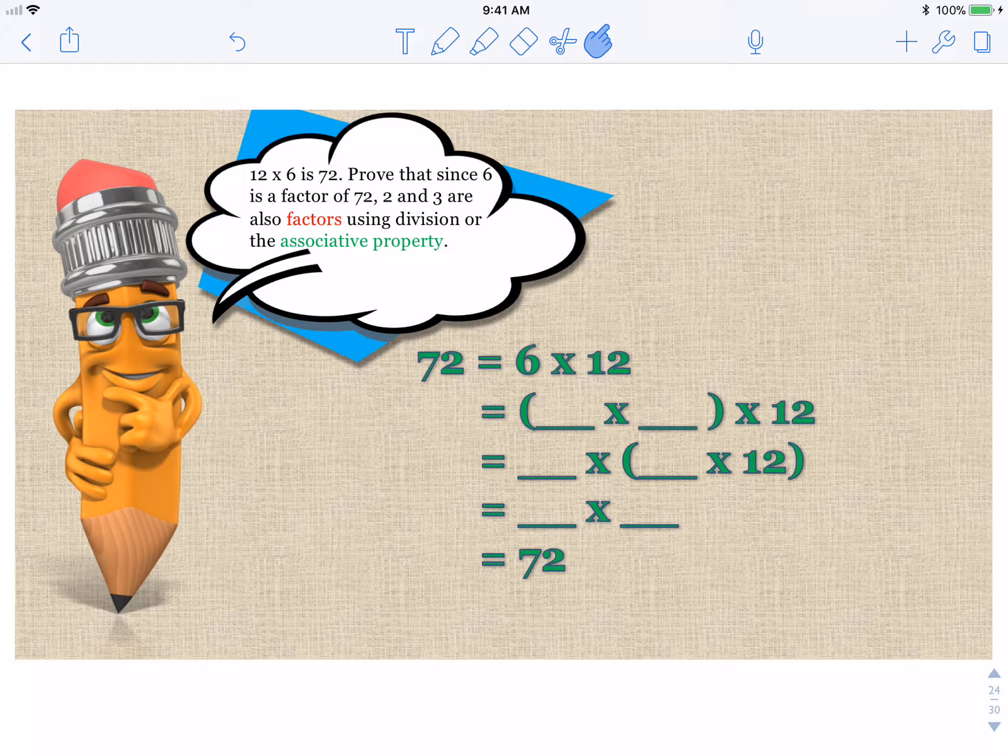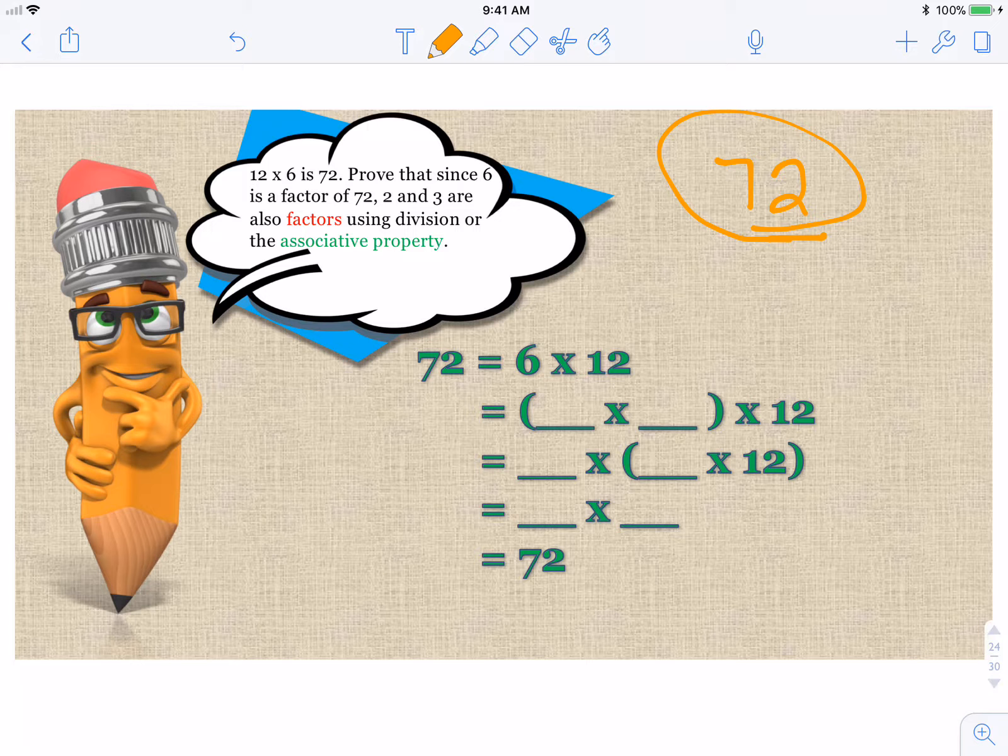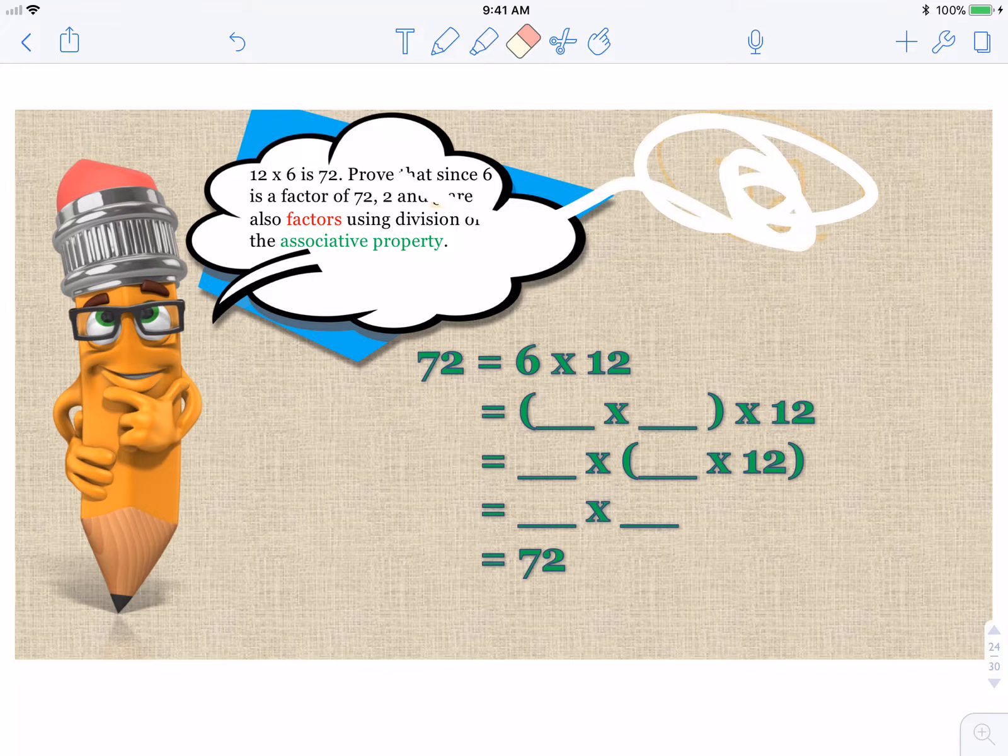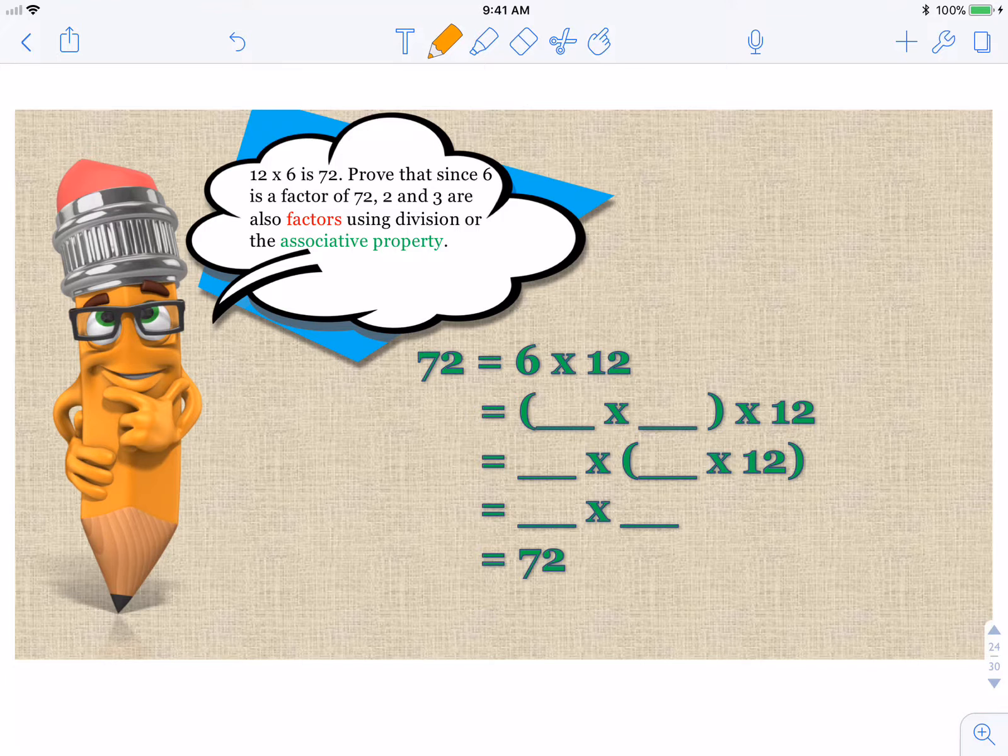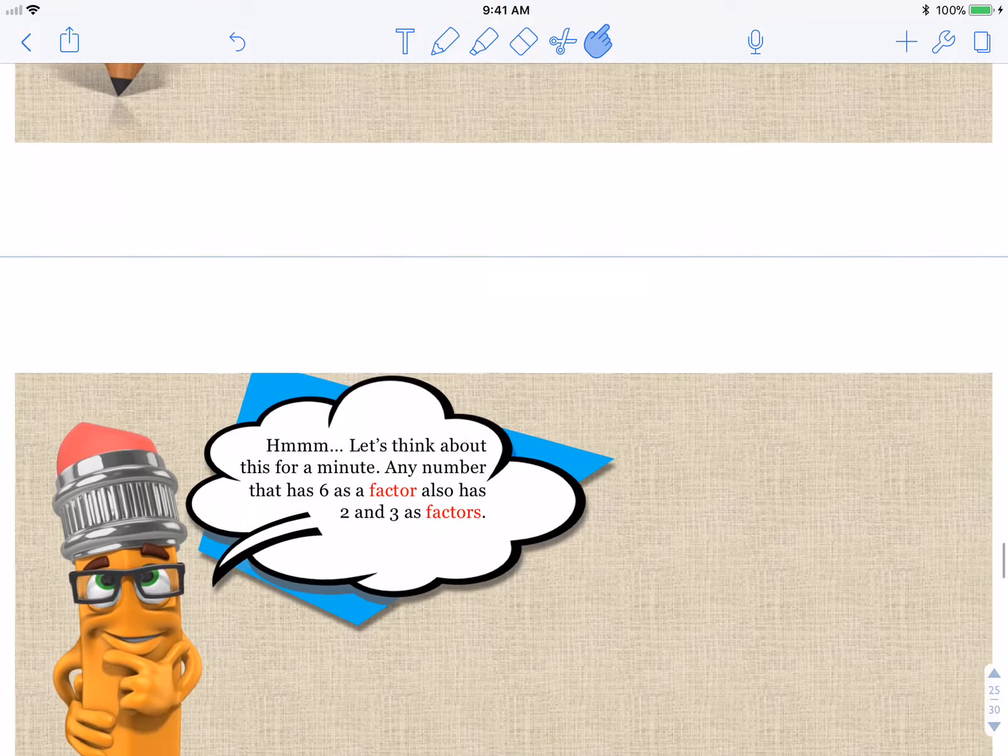Multiply 6 times 12. The answer is, go ahead and solve and see what you get. So we start with 72 because 6 times 12 is 72. Prove that if 6 is a factor of 72, 2 and 3 are also factors using division or the associative property. So you can divide 72 by 2 and 3 or you can use the associative property. Now, if you use my little trick, 72 ends with a 2. That means 2 goes into it. 7 plus 2 is 9. Does 3 go into 9? Yes, 3 goes into 9. So 3 goes into 72.